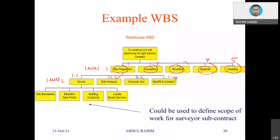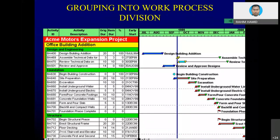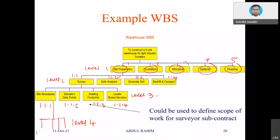This is like chapters and subtopics in a book, or even in your thesis. Level 3 falls under Level 2 — for instance, site boundary falls under survey, so the number would be 1.1.1, then 1.1.2, 1.1.3, 1.1.4. If under site boundary we have further sub-activities, that is Level 4, giving us 1.1.1.1 — that is what WBS is all about.